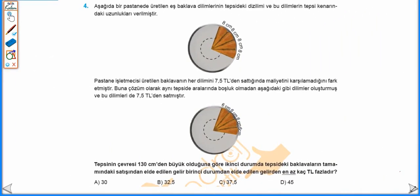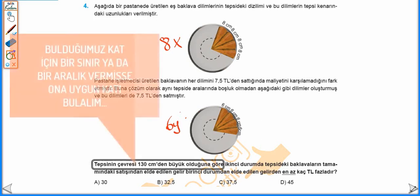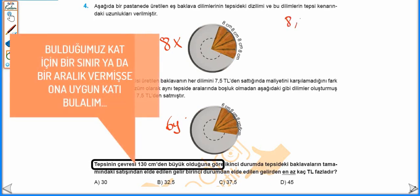Aşağıda bir pastanede üretilen eş baklava dilimlerini tepsideki dizilimi ve bu dilimlerin tepsi kenarındaki uzunlukları verilmiştir. Birinci tepside uzunluk 8 cm, dolayısıyla tepsinin çevresi 8'in bir katıdır. İkinci tepside uzunluk 6 cm, yani tepsinin çevresi aynı zamanda 6'nın da bir katıdır. Her iki tepside de dilimlerin tanesi 7 tam 15 TL'den satılmış, tepsinin çevresi 130 cm'den büyük olduğuna göre, ikinci durumda tepsideki baklavalların tamamının satışından elde edilen gelir birinci durumdan elde edilen gelirden en az kaç TL fazladır diyor. Tepsinin çevresi hem 8'in hem de 6'nın katıysa 8'in ve 6'nın EKOK'unu bulduğumuzda 24'tür.